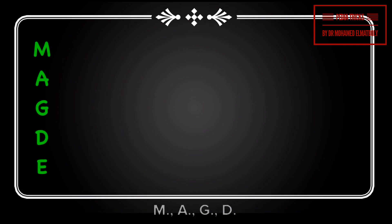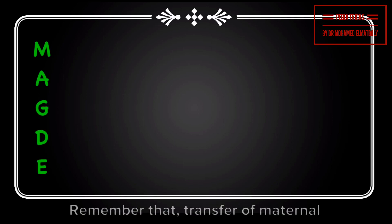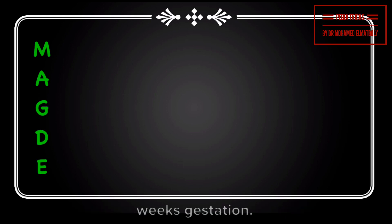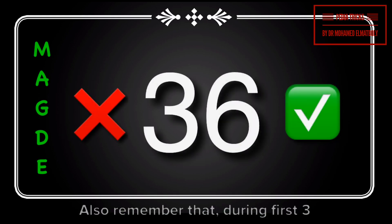There are five types of immunoglobulins: M, A, G, D, and E — or MAGED. Remember that transfer of maternal antibody to the fetus is low before 36 weeks gestation.